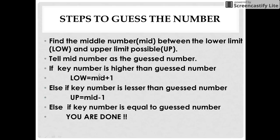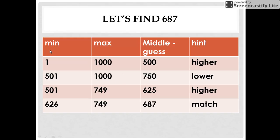If the number is higher than the guessed number, then our lower limit is changed to middle number plus 1. So we change our lower limit to 500 plus 1 that is 501. We again find the middle of 501 and 1000 which comes out to be 750 and we get our hint as lower. We again repeat the same steps as mentioned previously till we get the right match.